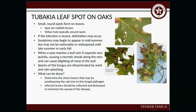For leaf spot on oaks, you're going to see small, round, reddish-brown spots form on the leaves with a yellow halo around the dark spot. Symptoms may begin to appear in mid-summer but are not normally noticeable or widespread until late summer or early fall. When the spot reaches a leaf vein, it expands rapidly and kind of takes over the leaf. Spores of this fungus are dispersed by wind and rain splashing. To stop it: determine what's stressing your tree, then remove those infected leaves, break them up, and destroy them. You'd be surprised — often that's all you really need to do when you see a disease on a leaf.